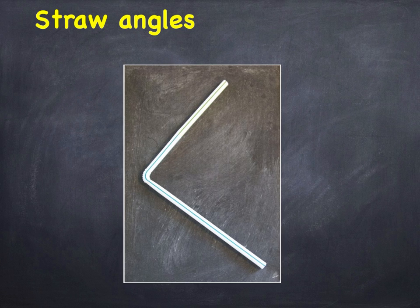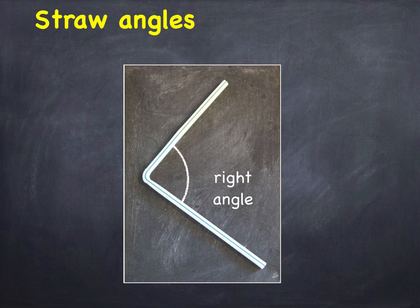This one is a right angle. That's 90 degrees. And by the way, right angles are usually marked with a square shape like this.